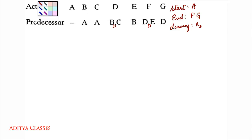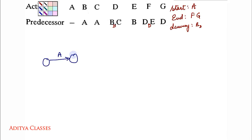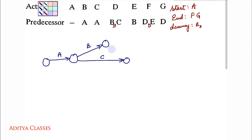Let us go ahead with the network. Who is starting the network? A — it is waiting for no one. Then B and C are both waiting for A, so as soon as A is done, B and C will proceed. Then D is waiting for C as well as a dummy of B — here we have C and then there will be a dummy of B.